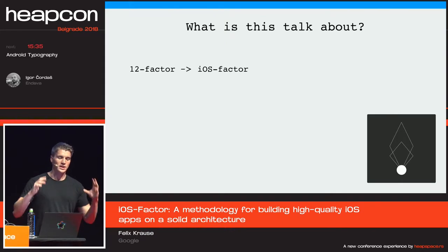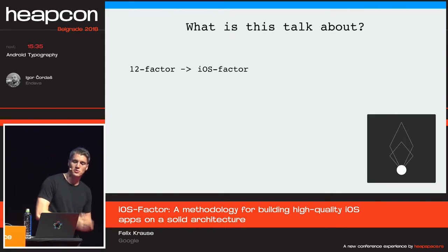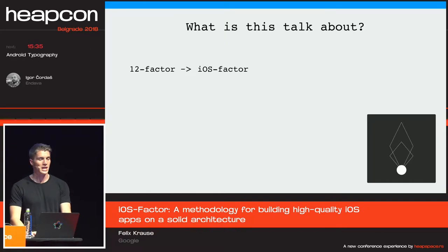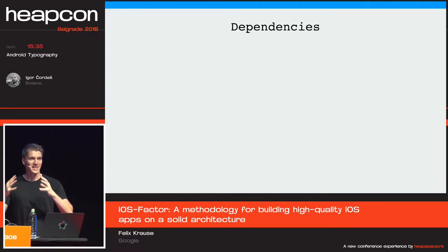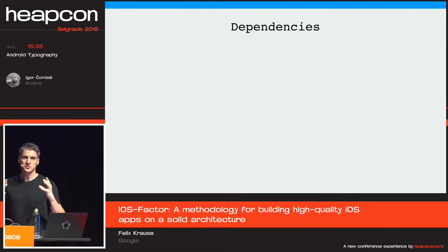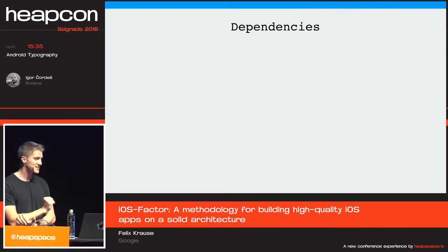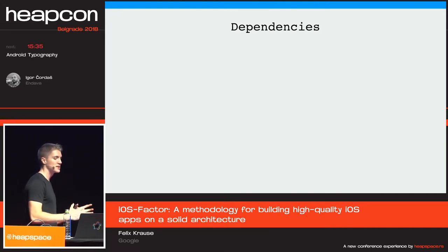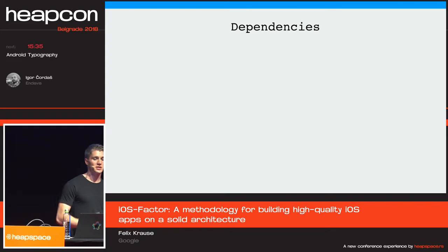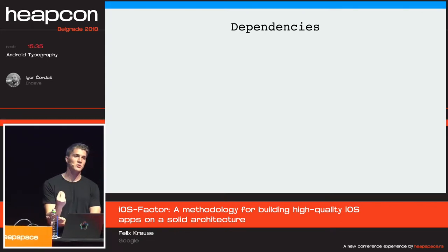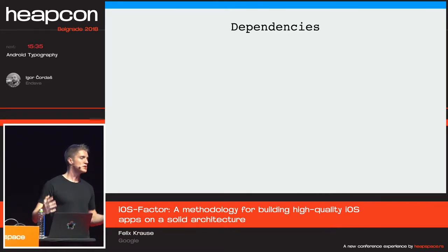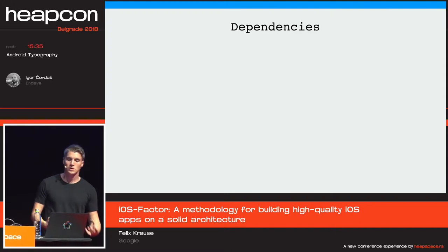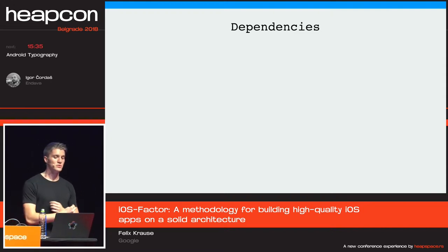Everything I talk about in this talk is not specific to a programming language — it can be applied to all mobile apps, no matter if it's Swift, Objective-C, Java, or JavaScript. As you probably know, ideally your build tools should never rely on the implicit existence of system-wide packages. All your dependencies should be declared as part of your project, as part of your Git repo. This includes the exact version of Xcode, CocoaPods, and Fastlane. This will allow you to re-trigger builds from half a year or one year ago, and you know it will succeed as the build is fully reproducible.